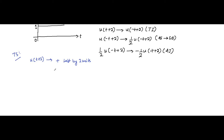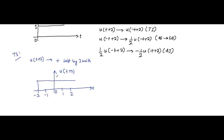So this unit step signal has to be time-shifted by 2 units to the left. Let's say here it is -2, here -1, here 0, here 1, here 2 — so the signal will start from here. This is the time-shifted signal.